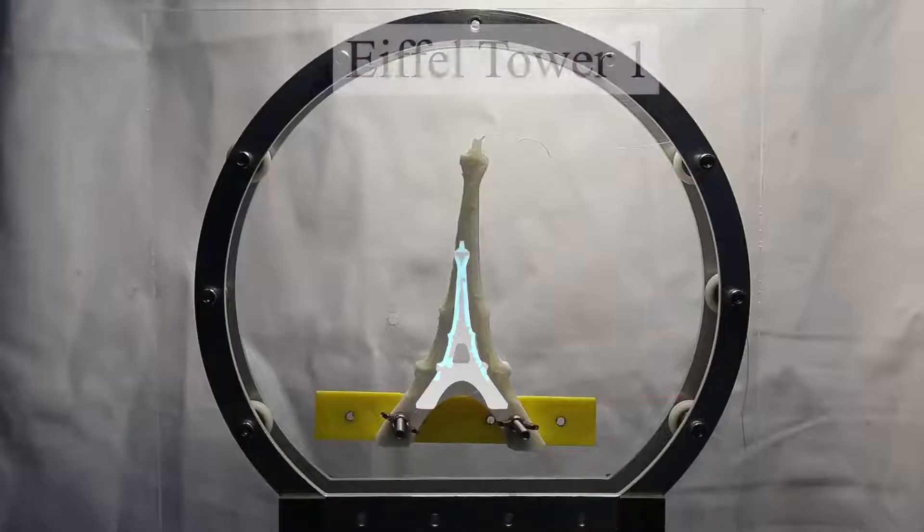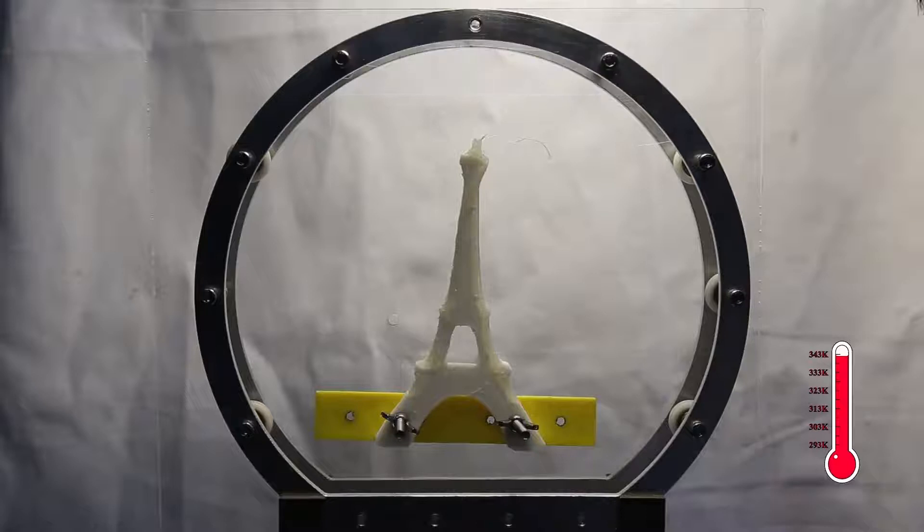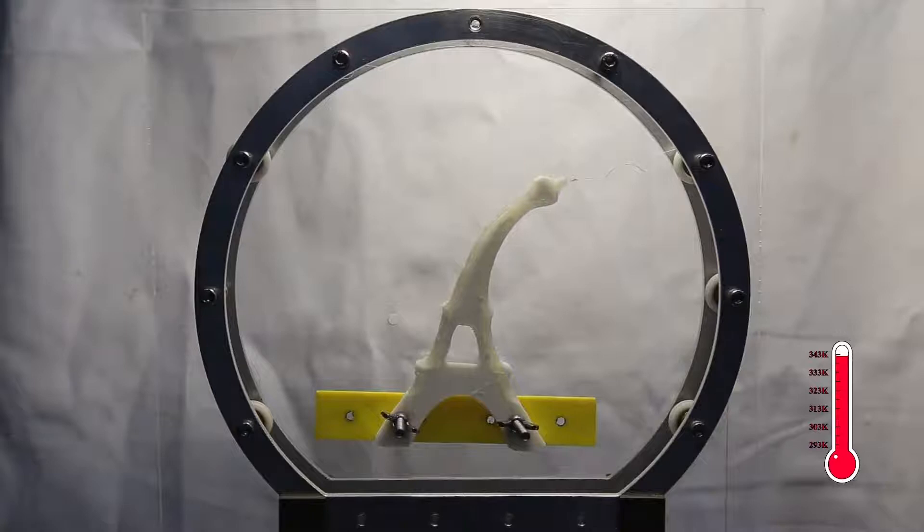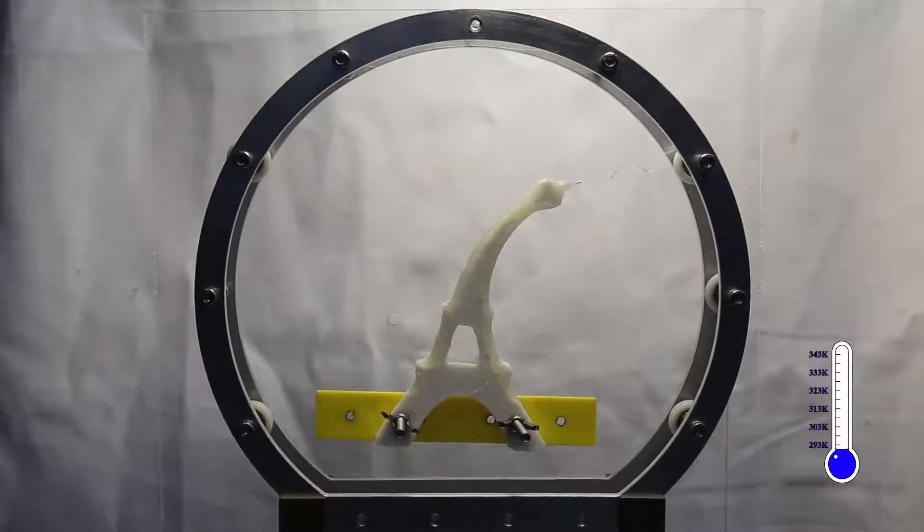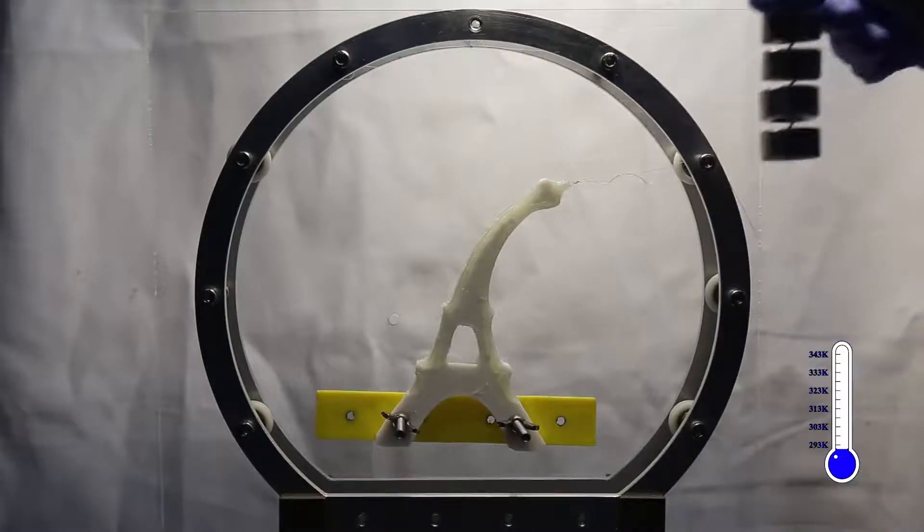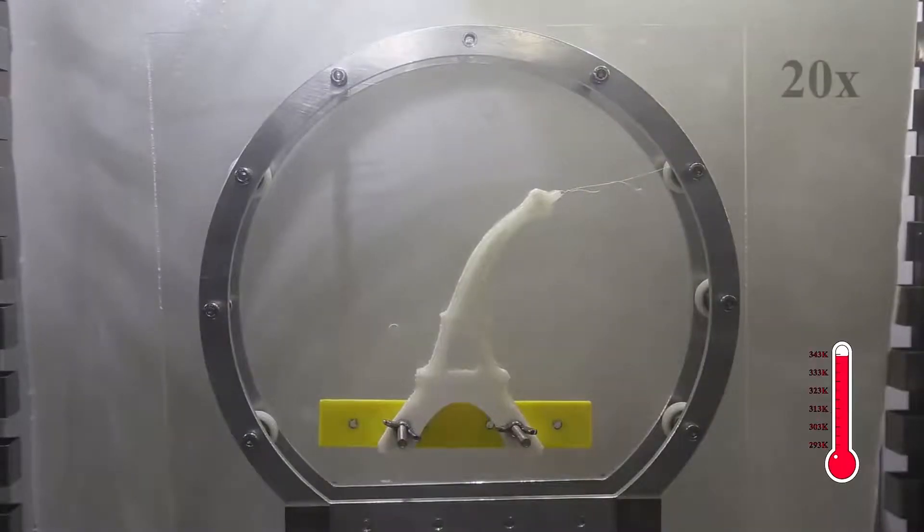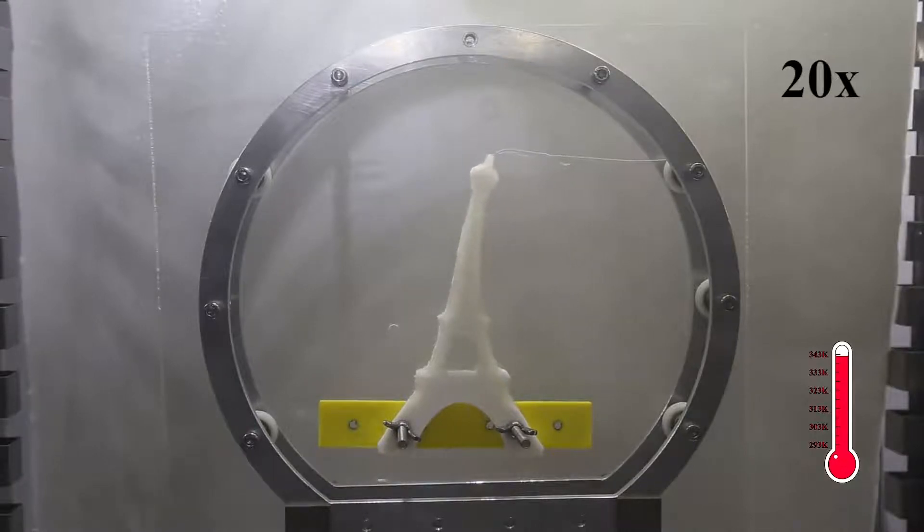We show a 4D printed Eiffel Tower object designed with our computational framework. Using sparse external forces, we deform the Eiffel Tower object toward the median shape. Then we cool down the temperature to fix its temporary shape. Next, we unload imposed forces and the object deforms slightly directly to the desired target shape. Finally, we reheat the object and it recovers its source shape due to the shape recovery properties of SMP material.